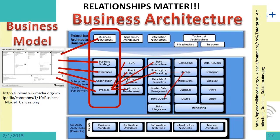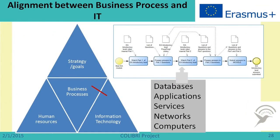These relationships also help in alignment between business architecture and IT. Let us consider an example with our process of Colibri. This is our business process, where we listen to the videos, where we prepare answers to the questions, and so on. This is the model of the introductory part. And for doing this, we are using databases, different applications, services, networks, computers. And practically, if we would build an enterprise architecture, we would see how our business process is aligned to these information technology issues.